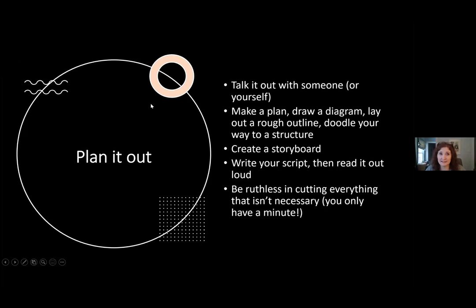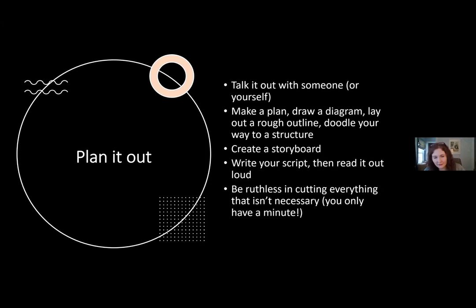How do you do this? Start by talking it out with someone — discuss the important points you want to convey, then make a plan. Draw a diagram, doodle, rough it out in longhand. Then create a formal storyboard: 'I want this image here, this image here, these are the transitions.' Then write your script and read it out loud — it's really important to do that. You find out whether it's too long but also whether it's easy to read and simple enough. You'd be surprised what you discover when you read words out loud. Be ruthless in cutting out everything you don't need, because you only have 60 seconds.